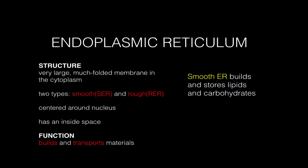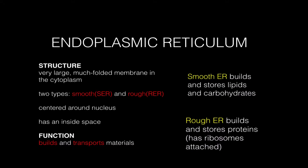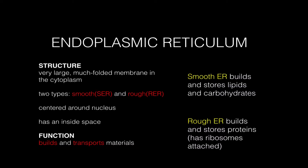The smooth ER's job is to build and store lipids and carbohydrates, while the rough ER is building and storing proteins because it has ribosomes attached, and ribosomes are the actual cell structures that attach amino acids to amino acids and actually build proteins. So with the ribosomes attached, the rough ER can build and then store these proteins. It's very important to remember the difference between these two ERs.